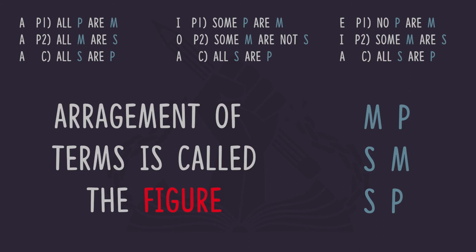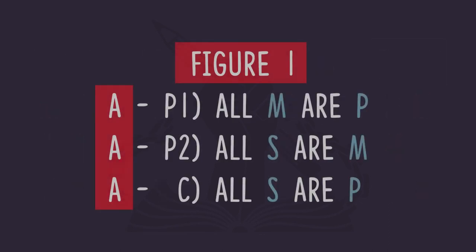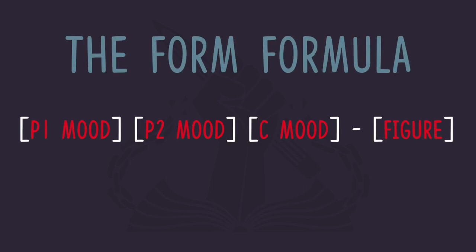There are four possible arrangements, and we use the numbers one through four to denote which arrangement of the minor, middle, and major terms we have. Figure one has M in the first position in premise one and in the second position in premise two. Figure two has the middle term in the predicate position in both premises. Figure three has the middle term in the subject position in both premises. Figure four is the inverse of figure one — the middle term is in the predicate position in premise one but in the subject position in premise two. With this in place we can describe our syllogism as AAA-1. When we have the three letters and a number to identify the structure of a categorical syllogism, we call that the form of the categorical syllogism.